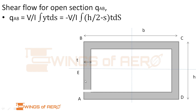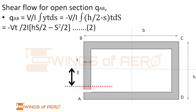At the point s along AB, the y-coordinate is (−h/2 + s). Substituting and integrating, we get q_AB = −(Vt/2I) × (hs/2 − s²/2). This is equation 2 — the shear flow for the AB member. At point A, s = 0, giving q_A = 0. At point B, s = h, giving q_B = 0. At point E (mid-height), s = h/2, giving q_E = Vth²/(4I).